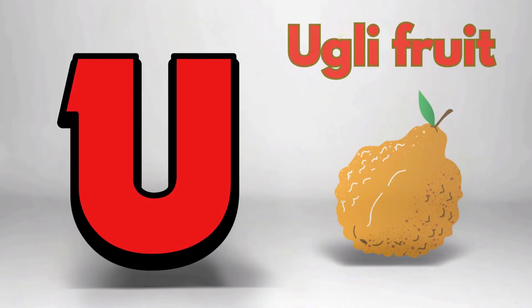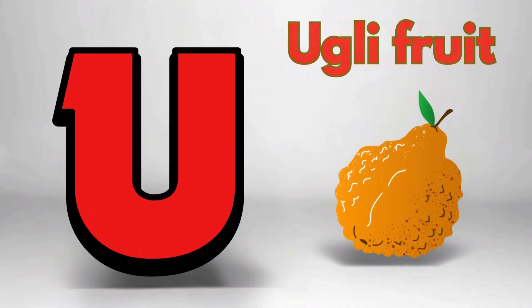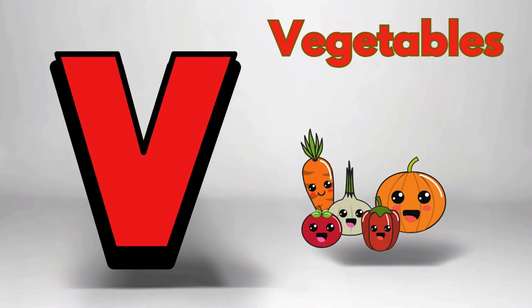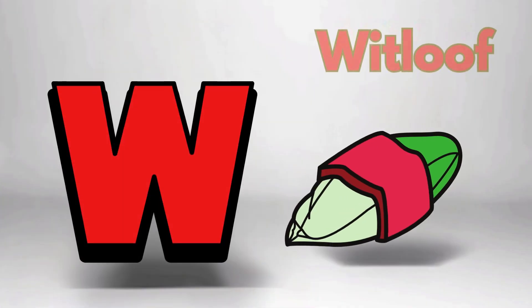U is for Ugly Fruit. Ugly Fruit. V is for Vegetables. Vegetables.